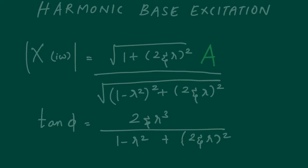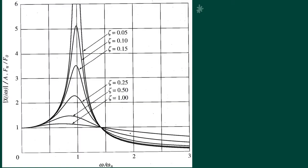As I keep telling you, in the case of harmonic excitation, time domain plots are not very informative. It is always advisable to go for frequency response plots for both these quantities, which gives us a lot more information and intuition about the behavior of the problem. Let's start looking at the frequency response plot for the displacement magnitude.